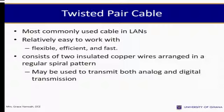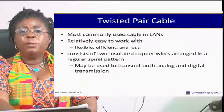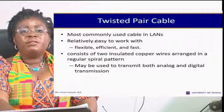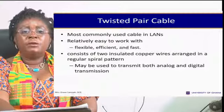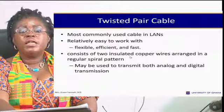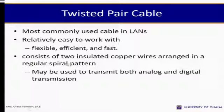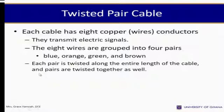Twisted pair cable is the most commonly used cable in LANs. It is relatively easy to work with — flexible, efficient, and fast. It consists of two insulated copper wires arranged in a regular spiral pattern, and may be used to transmit both analog and digital signals. Each cable has eight copper wire conductors that transmit electric signals. The eight wires are grouped into four pairs: blue, orange, green, and brown. Each pair is twisted along the entire length of the cable, and the pairs are twisted together as well.